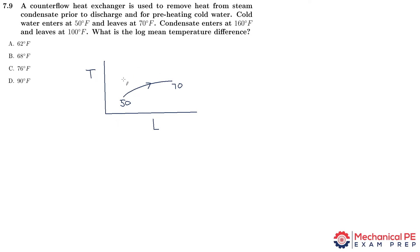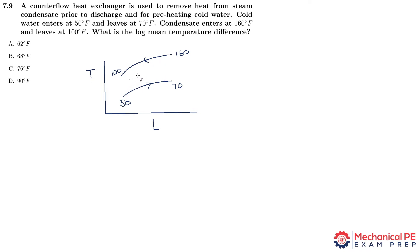But now that we know it's counter flow, it's going to be the opposite direction. So we draw it going to the left instead — the opposite direction — where this side is 160 and this side is 100. What that does is it keeps the delta T along the length of the heat exchanger closer to the average delta T.